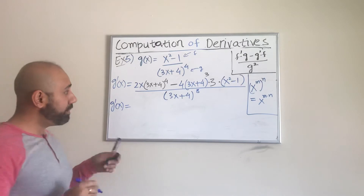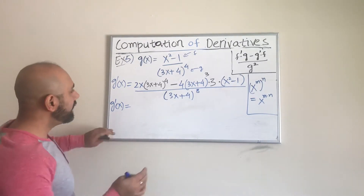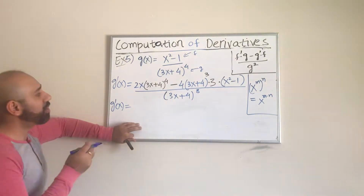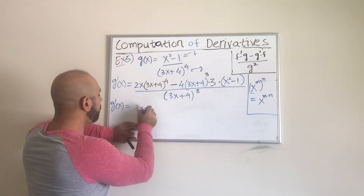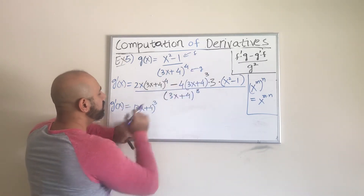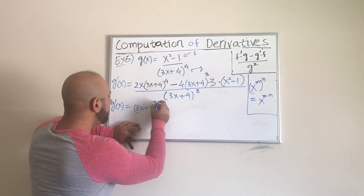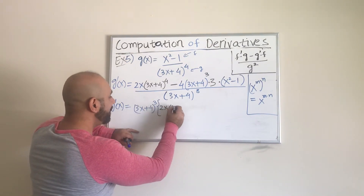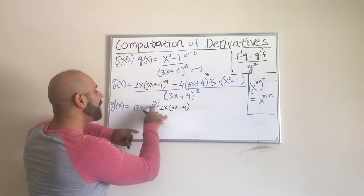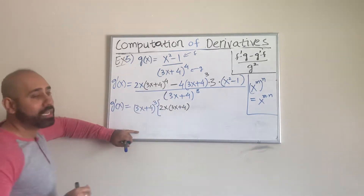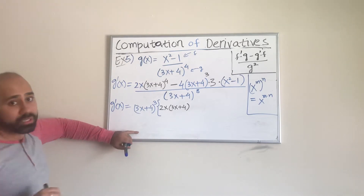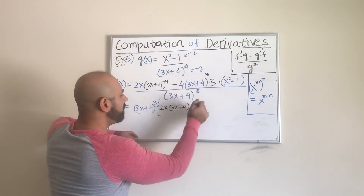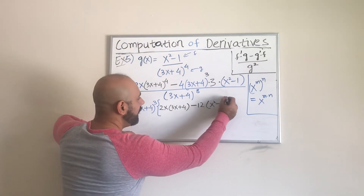We can still simplify. I can see that the term (3x + 4)³ appears in both parts of the numerator, so I can factor it out as the greatest common factor. Inside the parentheses I'm left with 2x times (3x + 4) — because I need the full power of 4, I only have 3 factored out so I keep one more. For the second term, all we are left with inside is 4 times 3, which simplifies to 12, times (x² − 1).